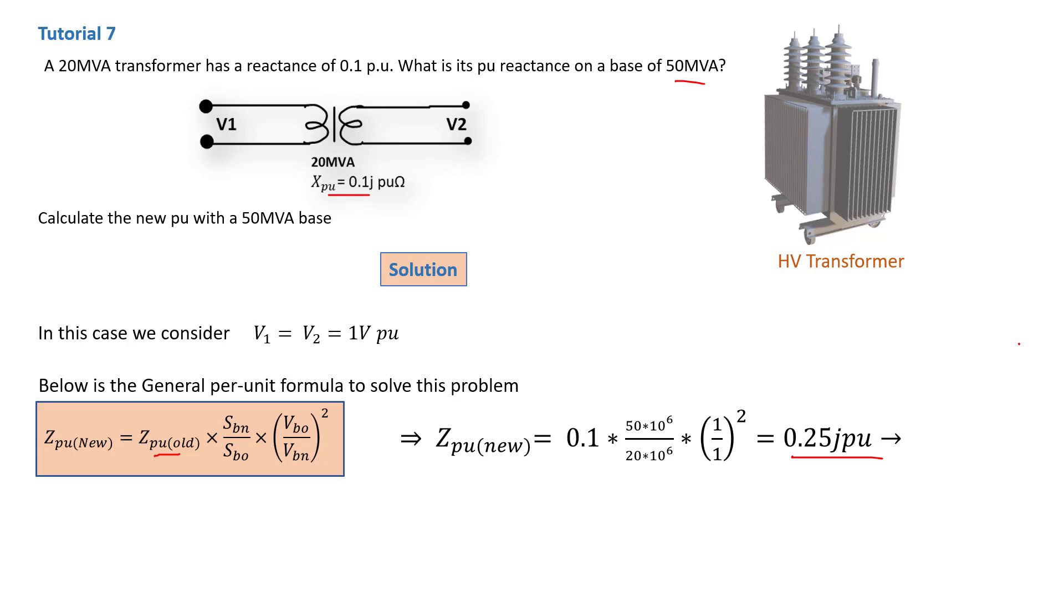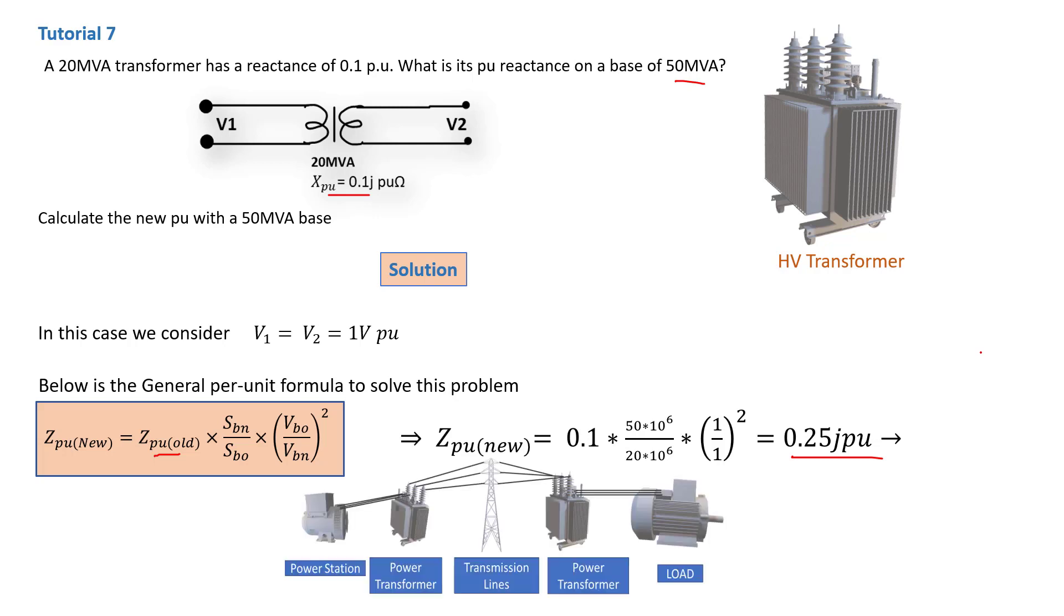So in power systems, in a transmission line as shown below, we can have an entire transformer like this transformer here, and this one, or this giant transformer here, represented by a simple per unit value. A per unit value does represent the quantities or rather the values of that transformer on a transmission line.